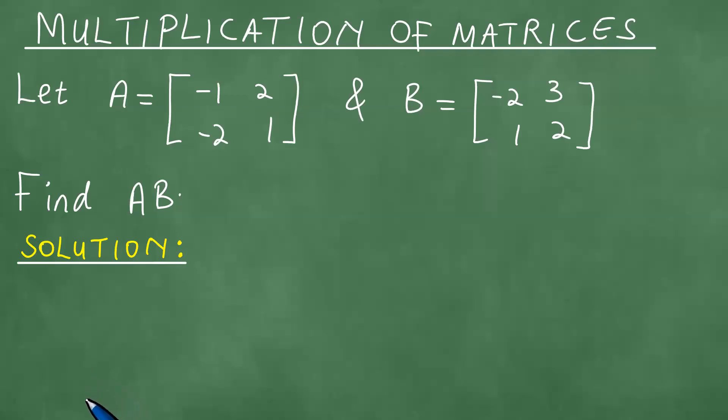We are focusing on the products of matrices and looking at the multiplication of matrices. Let A be the 2 by 2 matrix with entries -1, 2, -2, 1 and B be the matrix with entries -2, 3, 1, and 2.